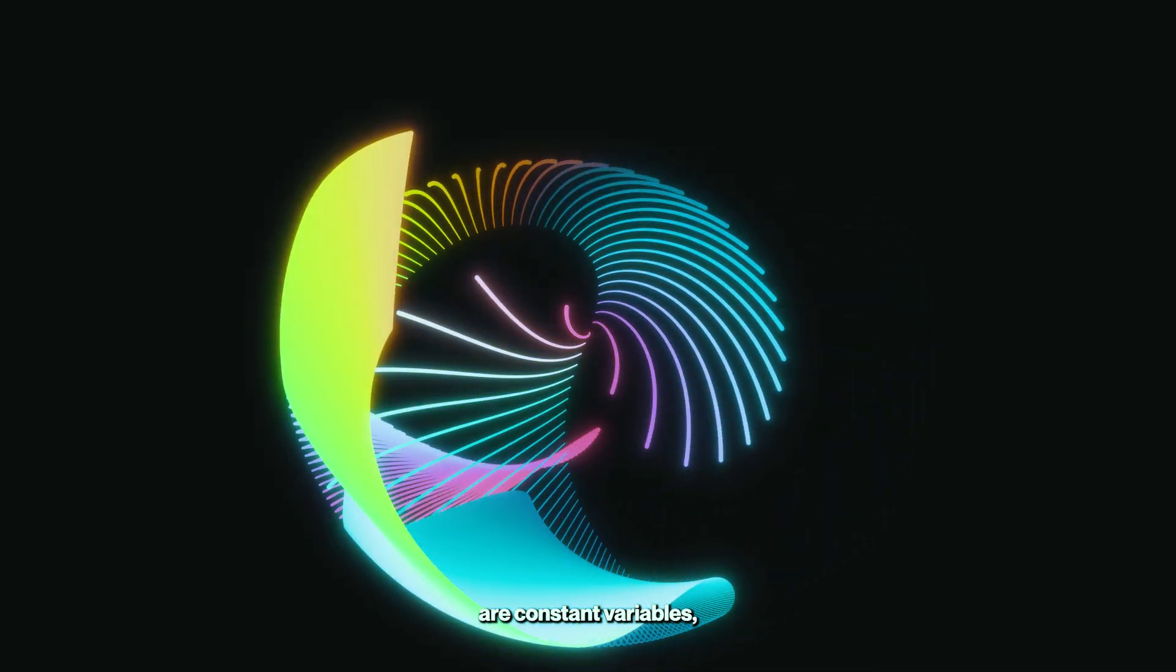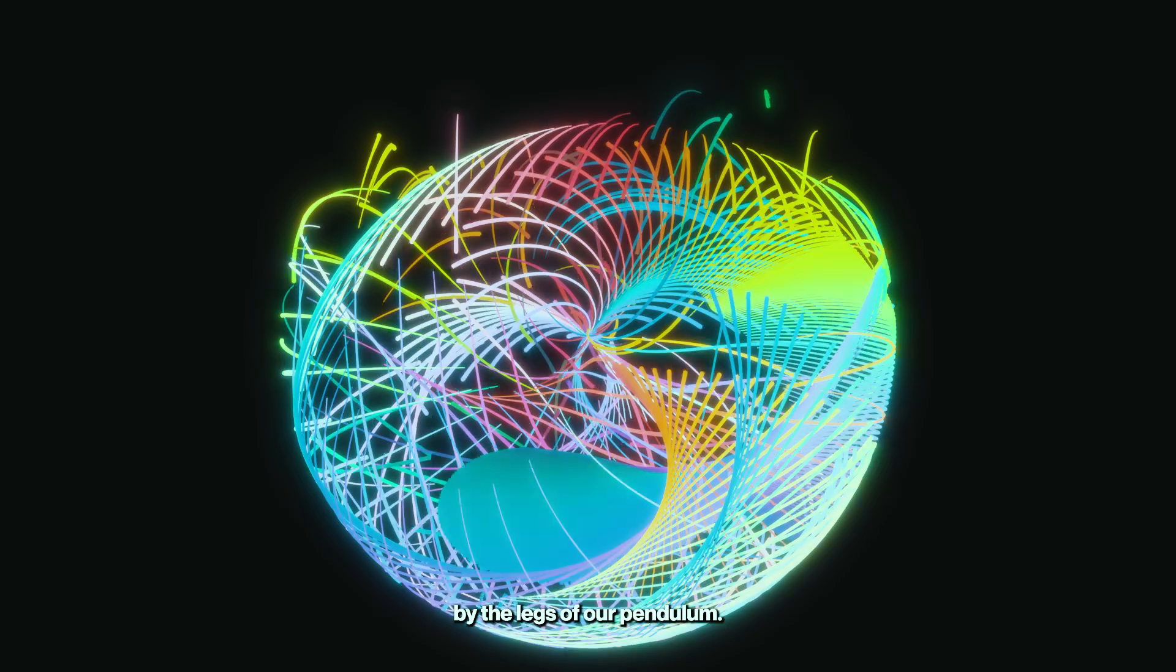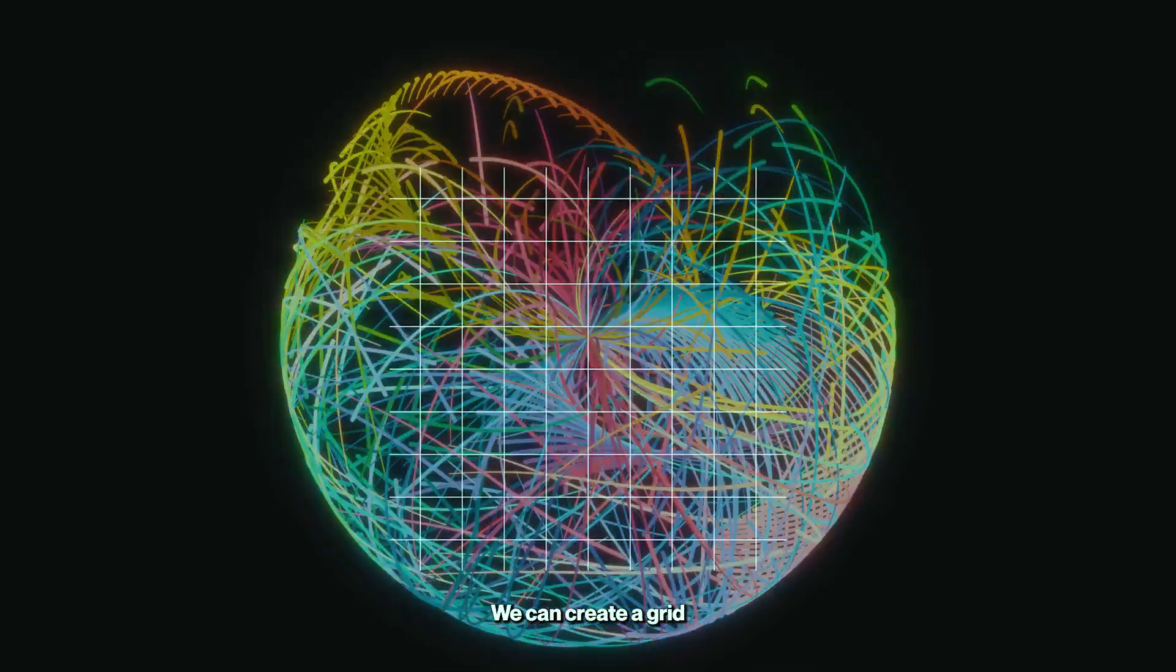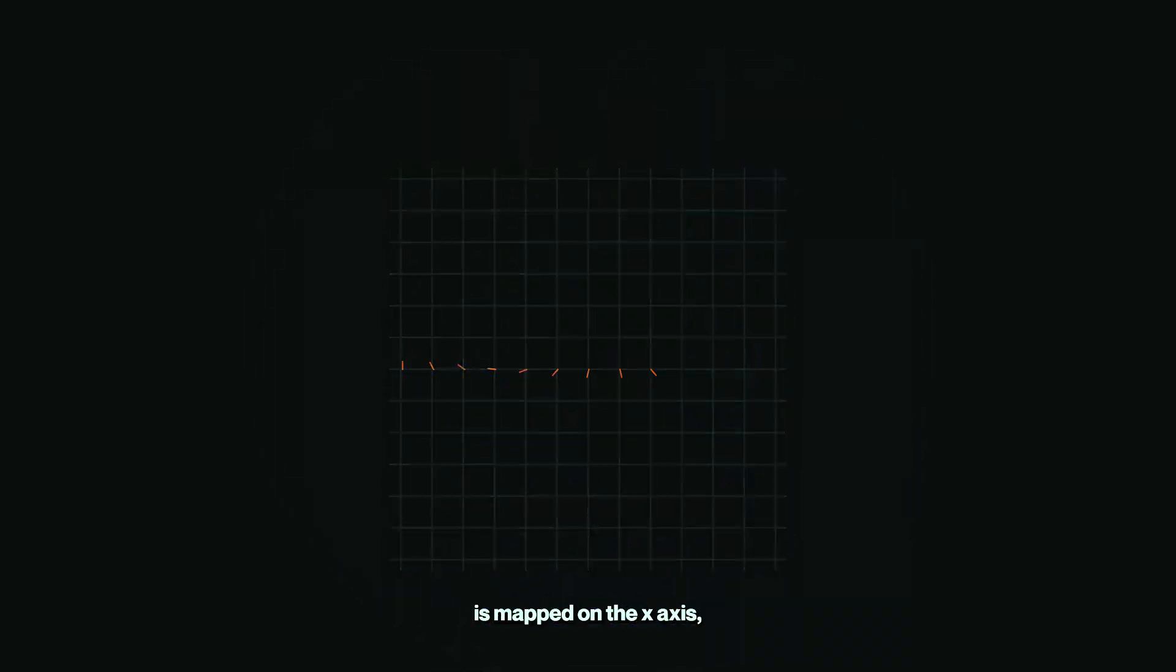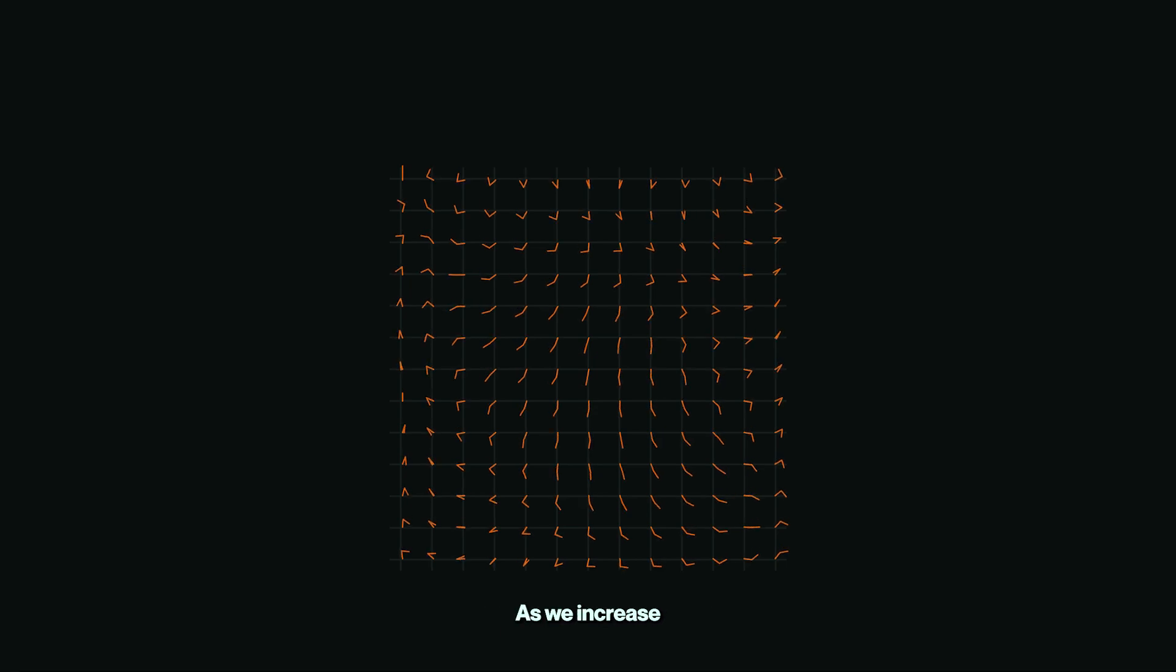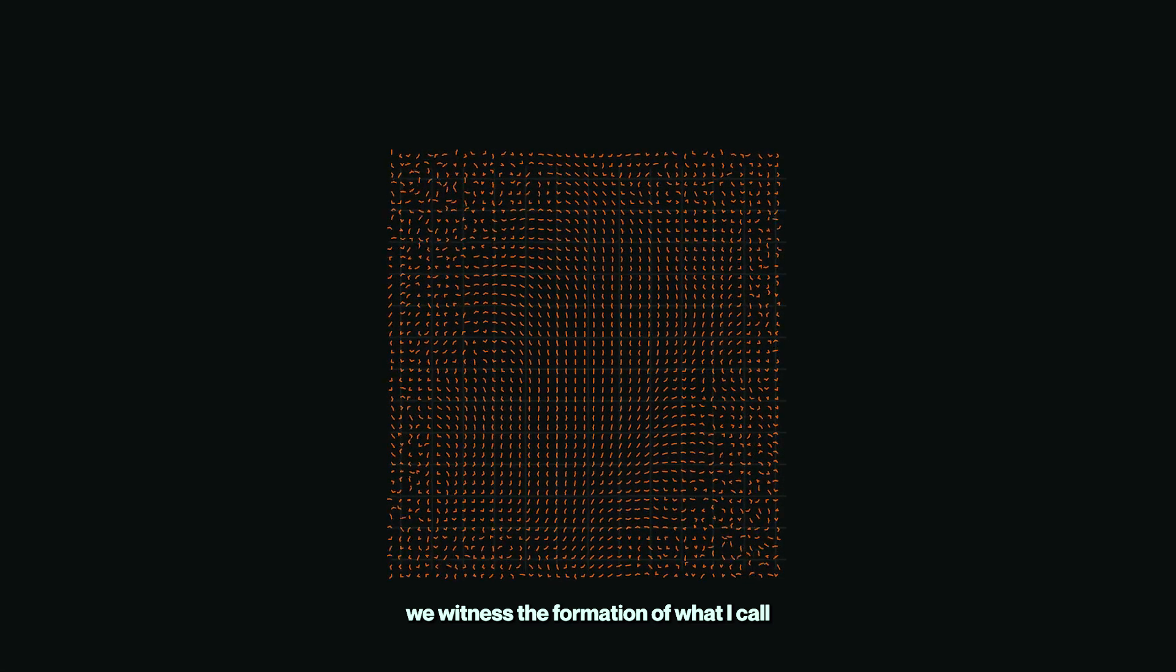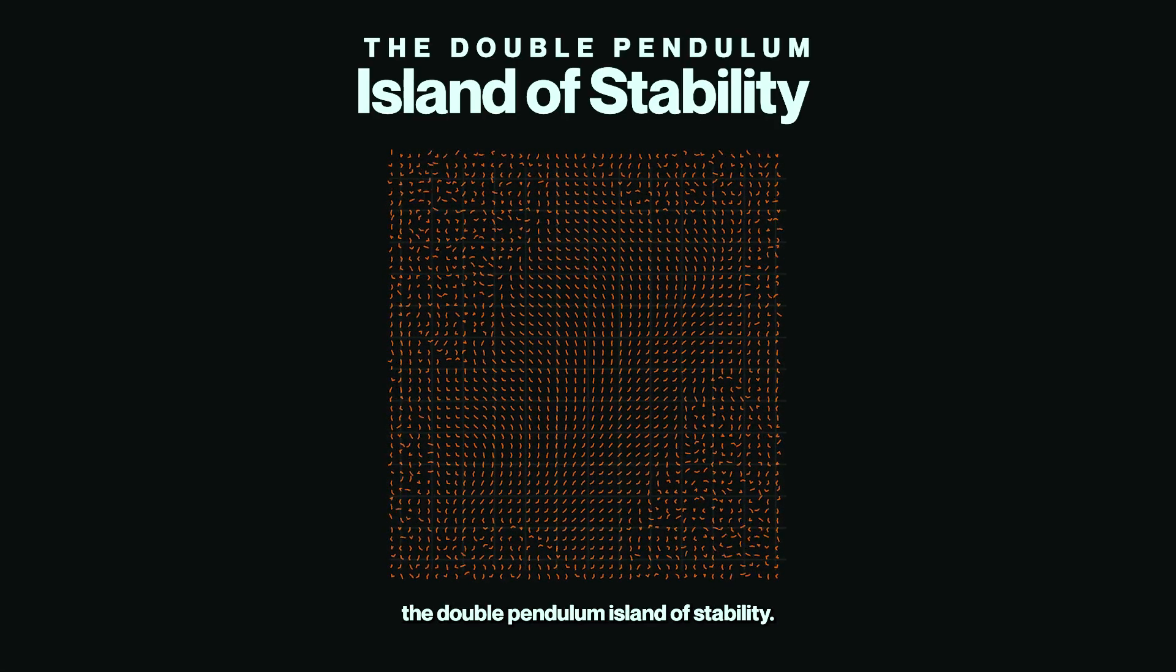Length and mass are constant variables, but there's another variable that evolves over time: the angle made by the legs of our pendulum. We can create a grid where the first angle is mapped on the x-axis and the second angle on the y-axis. As we increase the number of pendulums on this grid, we witness the formation of what I call the double pendulum island of stability.